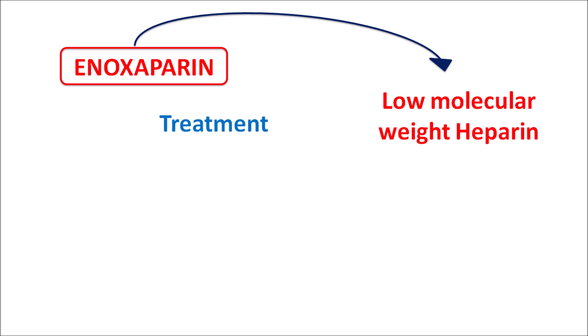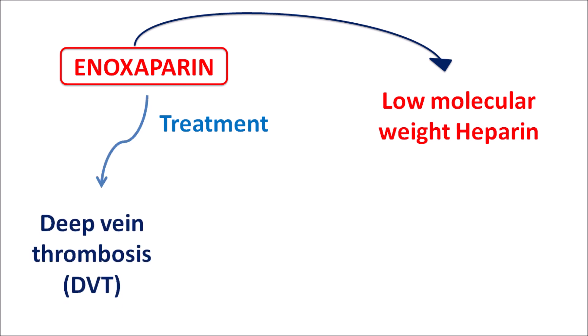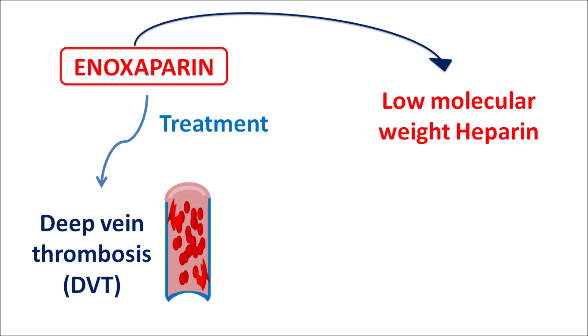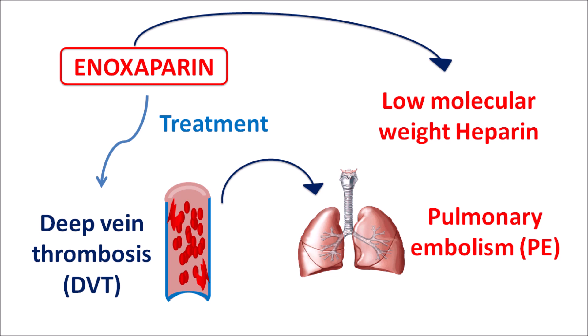This drug can be used in the treatment of deep vein thrombosis (DVT), which is associated with increased clotting and thrombotic events. If untreated, DVT can be converted into pulmonary embolism, a serious complication where increased clotting within pulmonary blood vessels reduces pulmonary circulation, leading to life-threatening effects. In both conditions, enoxaparin acts as an anticoagulant to reduce the clotting process.